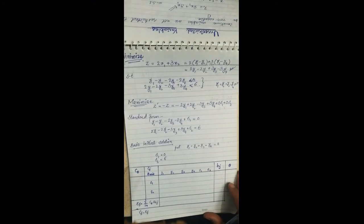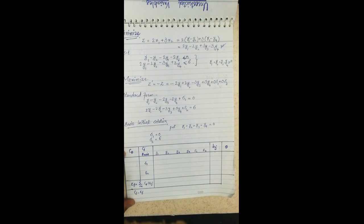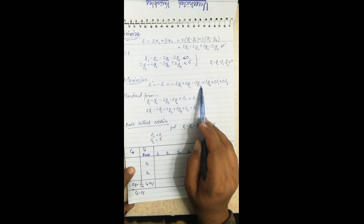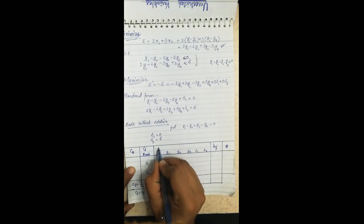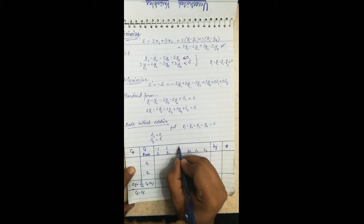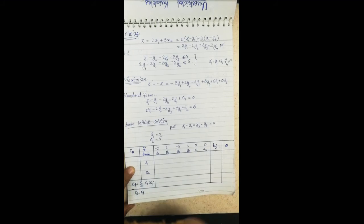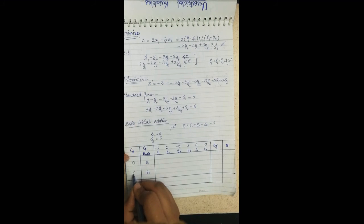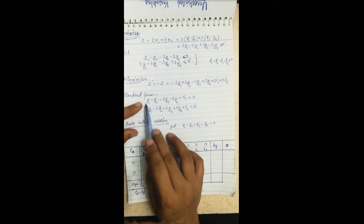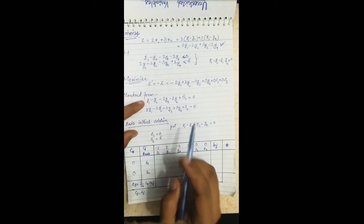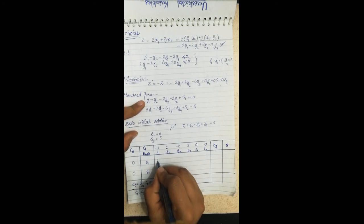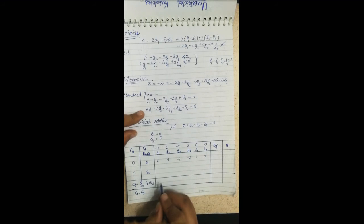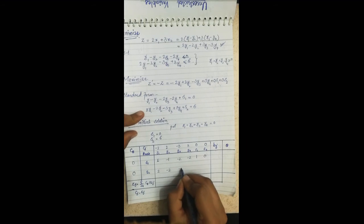For the simplex tableau, the cj row contains the coefficients of the objective function: minus 2, plus 2, minus 3, plus 3, and 0, 0 for the slack variables s1 and s2. The constraint coefficient rows are: for the first constraint, 1, minus 1, minus 2, minus 2, 1, 0; and for the second constraint, 2, minus 2, minus 3, 3, 0, 1.